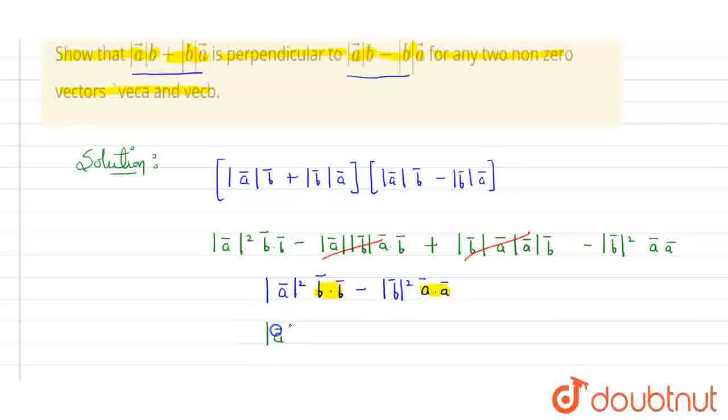It will be vector A square and similarly vector B square, and minus here we are having vector B square and vector A square.